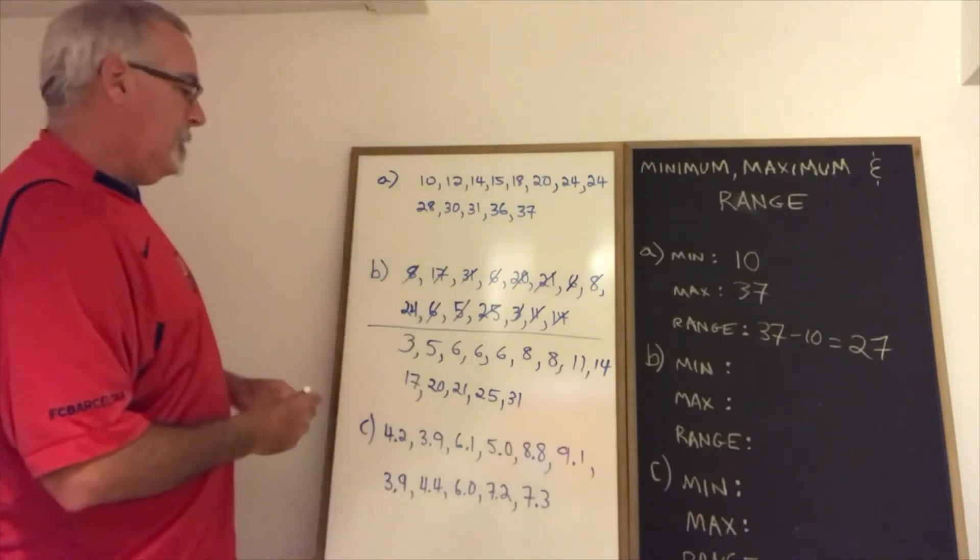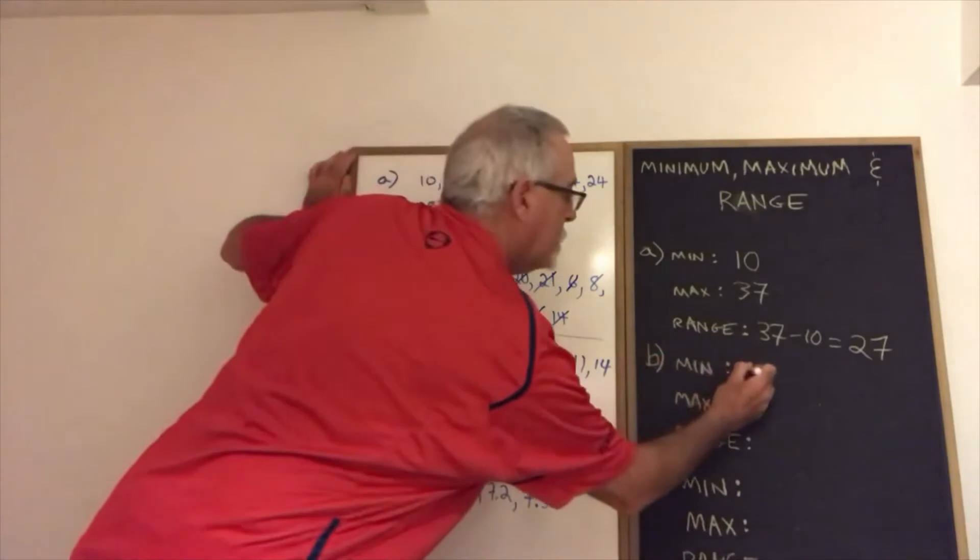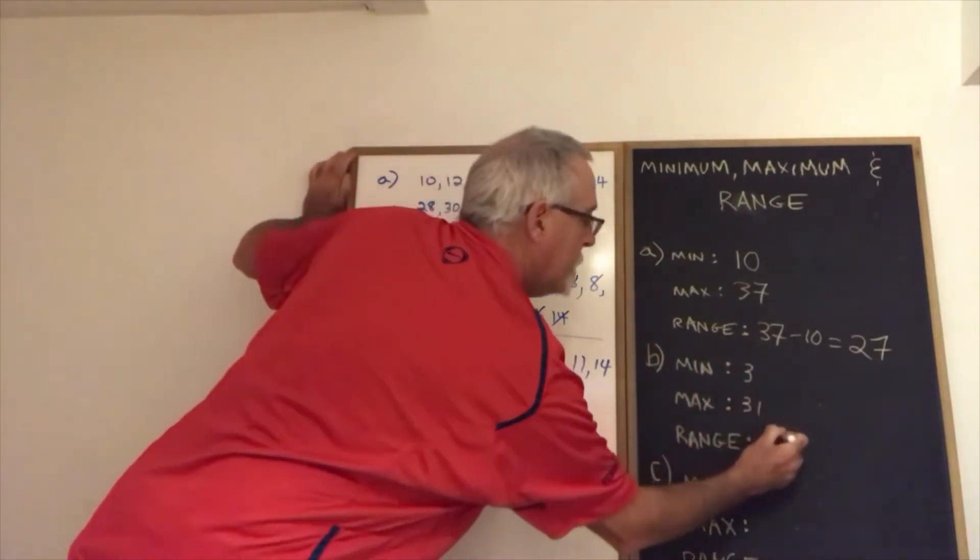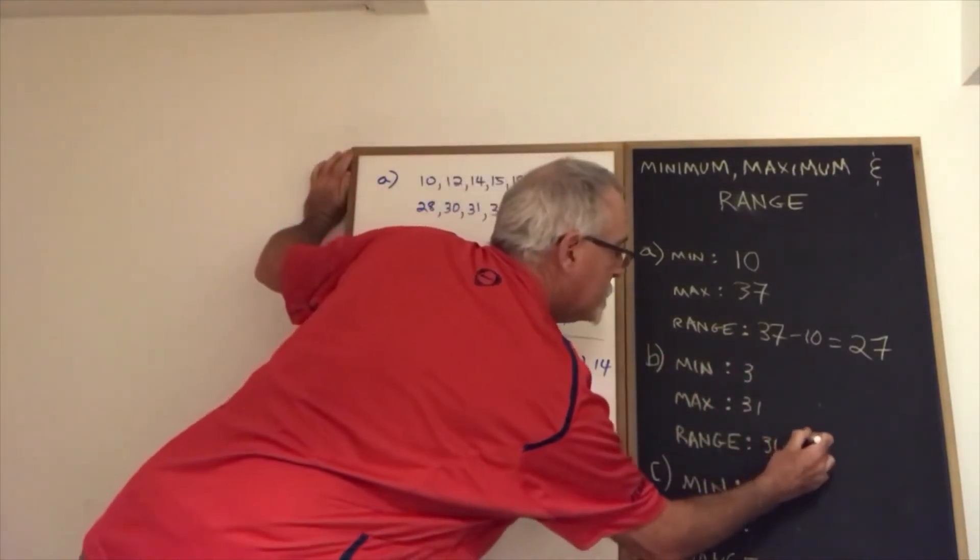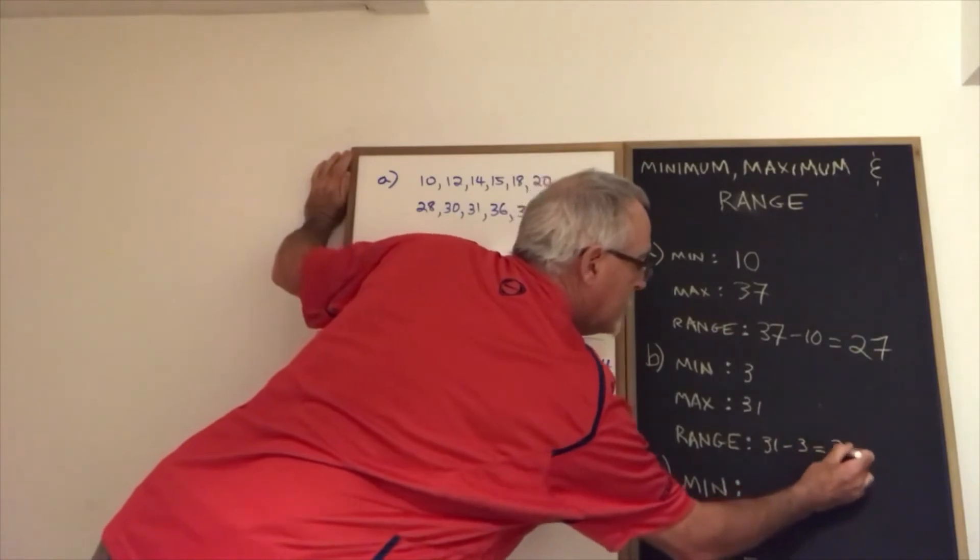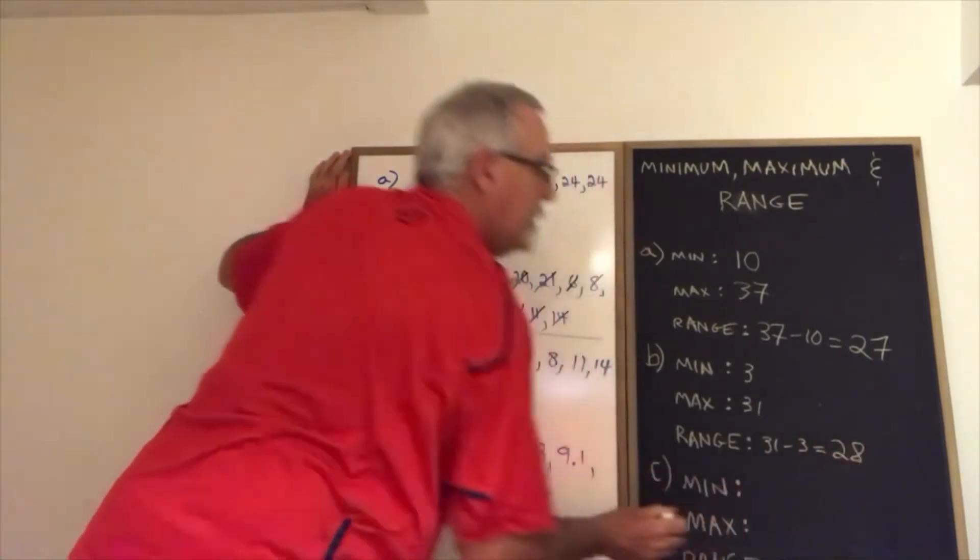The smallest number is three. The largest number is 31. The range is 31 minus three, which is 28. I've answered the question.